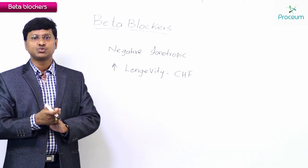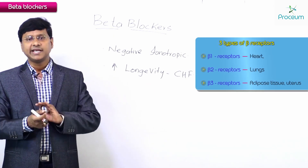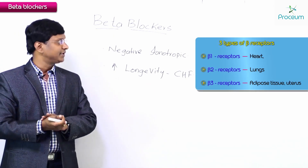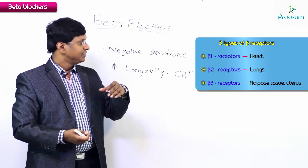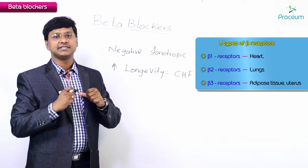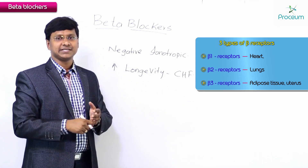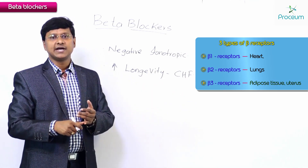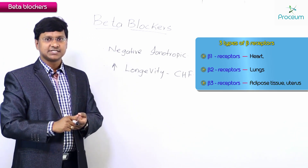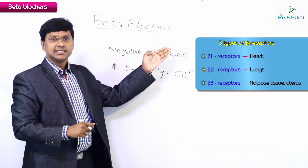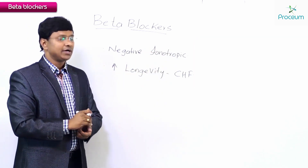Beta blockers are drugs that block the beta receptors. We have three beta receptors: beta 1 receptors, which are present in the heart; beta 2 receptors, which are present in the lungs; and beta 3 receptors, which are present in the adipose tissue as well as the uterus. Beta 1 receptors, apart from being present in the heart, are also present within the JG apparatus.